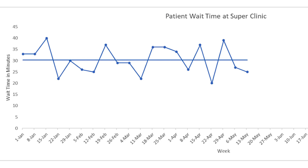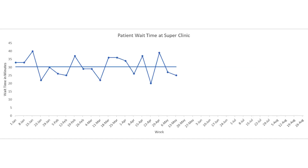Here's an example: you're a clinic manager trying to reduce patient wait time. You track it weekly and see the following. What is the process data telling you? Well, you can see your wait time is on average 30 minutes. It is also telling you that you sometimes have days where the wait time is 20 minutes, and other days when it is 40 minutes. Your process is telling you that it has variation — this variation is expected. All processes have it. The question is: how do you know when to react to it?